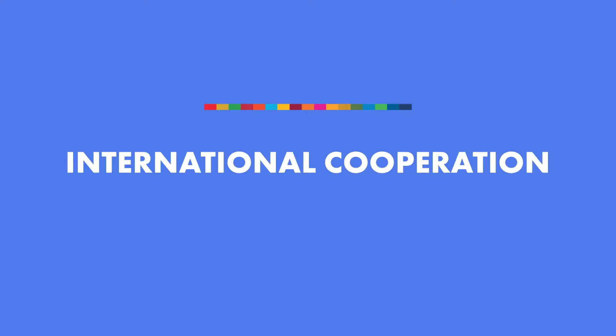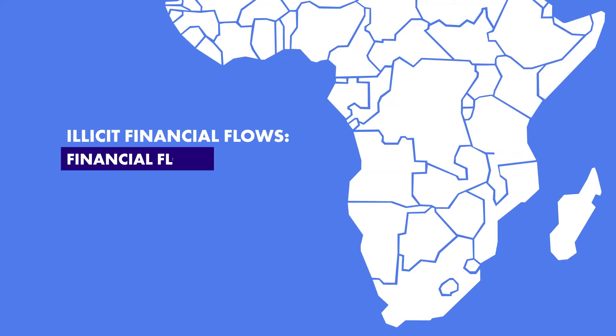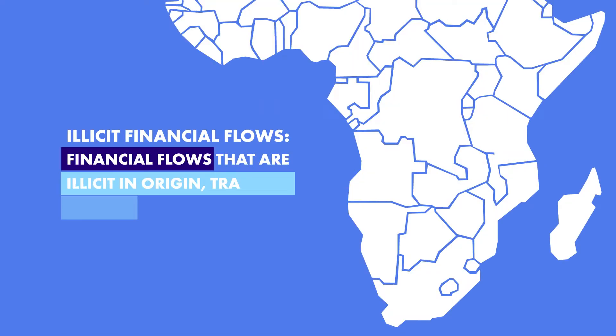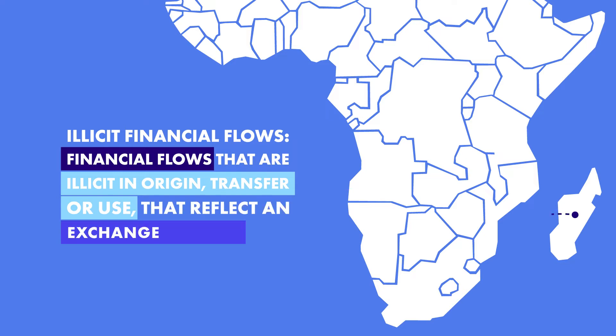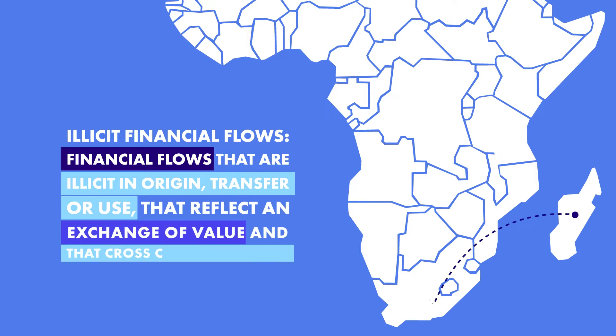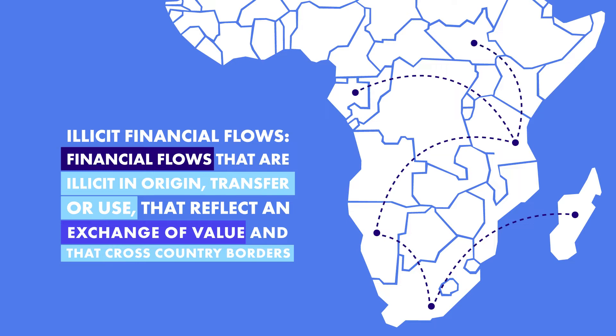The United Nations defines illicit financial flows as financial flows that are illicit in origin, transfer or use, that reflect an exchange of value and specifically that cross country borders.